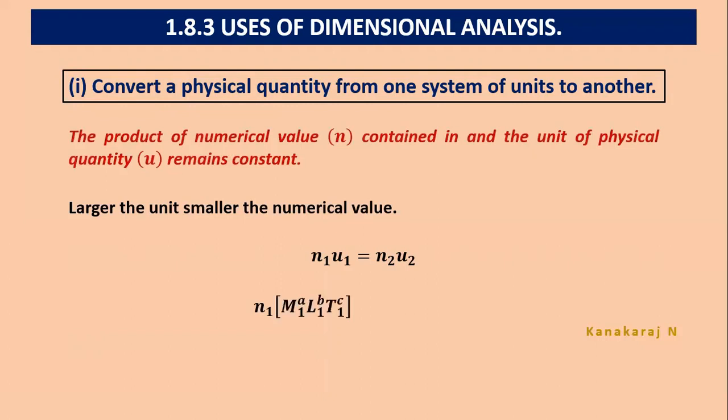We will go with substituting the value of U1 here. The dimensional formula of the physical quantity in the SI system, like M1^A, L1^B, T1^C. U2 is the dimensional formula of the same physical quantity in the CGS system. The power would be same, but M2, L2, T2. In SI system, M stands for kilogram, L stands for meter, T stands for second. In CGS system, M stands for gram and L2 stands for centimeter and T stands for second.